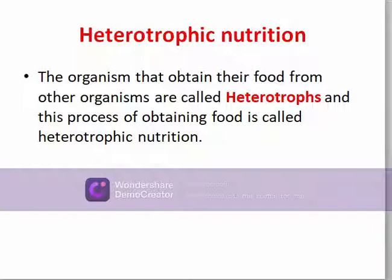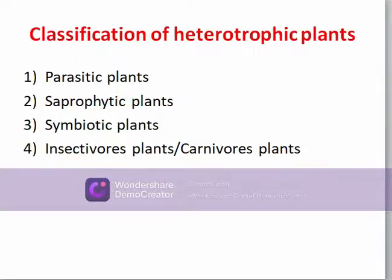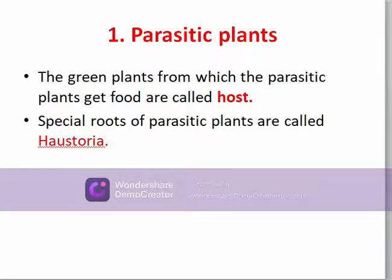According to the mode of nutrition, heterotrophic plants can be classified into the following types: parasitic plants, saprophytic plants, symbiotic plants, and insectivorous or carnivorous plants. The green plants from which parasitic plants get food are called the host.